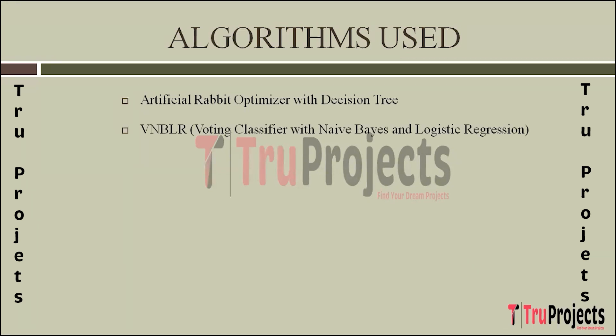The second algorithm is Voting Classifier with Naive Bayes and Logistic Regression (VNBLR). This involves a voting classifier that combines the predictions of Naive Bayes and Logistic Regression models. Naive Bayes assumes independence between features, calculating probabilities for each class. Logistic Regression predicts the probability of a binary outcome. The voting classifier aggregates these diverse predictions, potentially improving accuracy. This ensemble approach leverages the strengths of both models for more robust heart disease predictions.